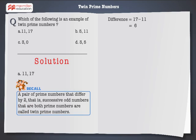Here the difference between 11 and 17 is 6. Therefore 11 and 17 are not twin prime numbers.